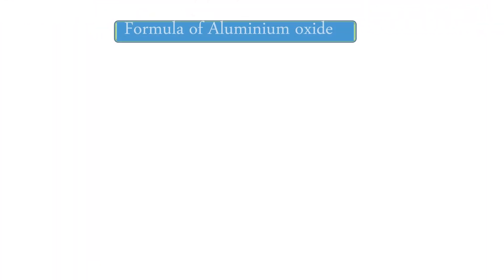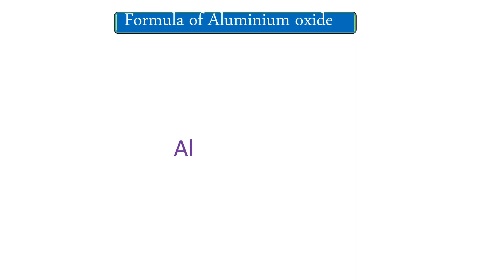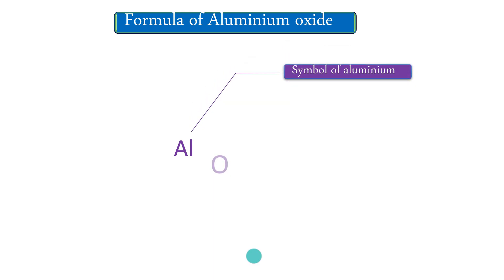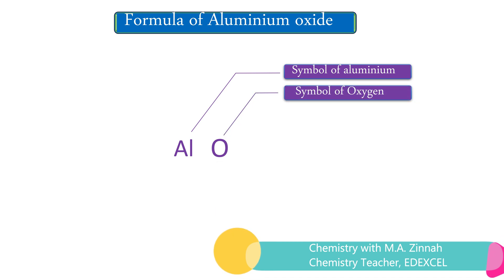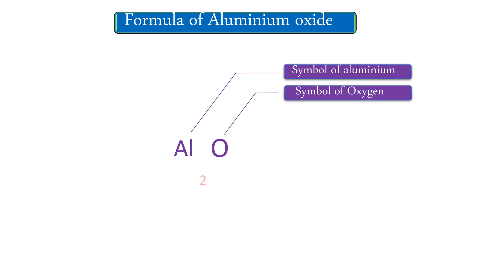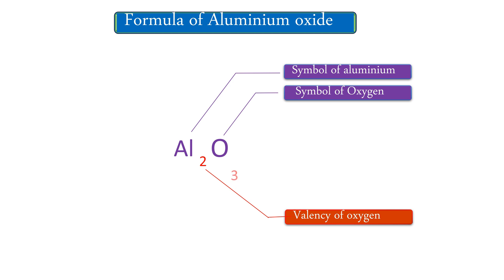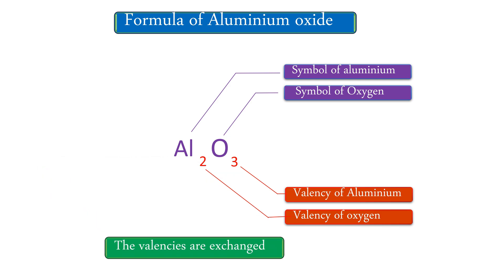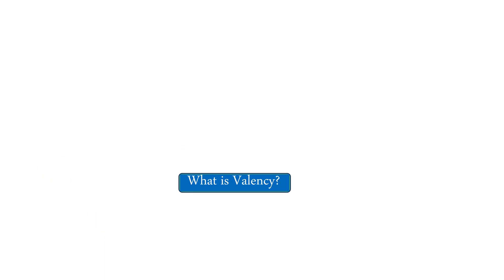For writing a formula you need to know two types of things: one is the symbol of the atoms or ions, and another is valences. We're starting with an example — aluminum oxide. We write aluminum oxide with the symbol of aluminum (Al) and oxygen (O). After we write the symbols, we write the valences. The valency of oxygen is written near aluminum, and the valency of aluminum is written near oxygen — the valences are exchanged. This gives us aluminum oxide.